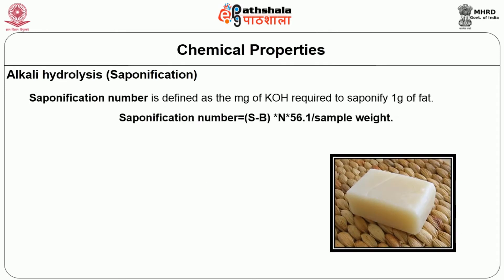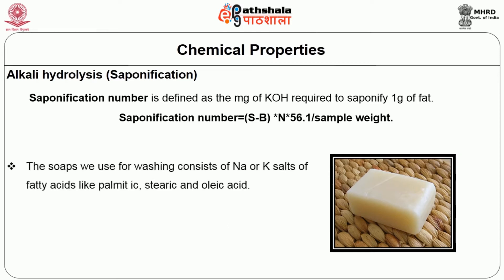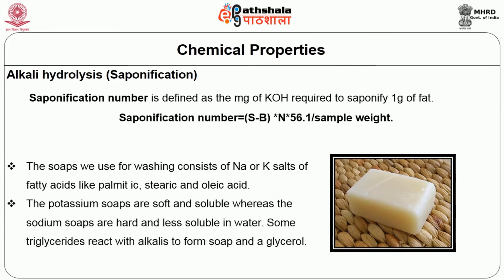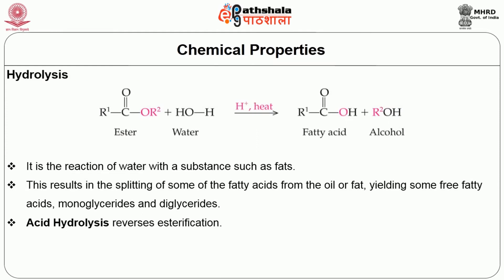The saponification number is defined as the milligrams of potassium hydroxide required to saponify one gram of fat. The soaps we use for washing consist of sodium or potassium salts of fatty acids like palmitic acid and oleic acid. Potassium salts are easily soluble in water, but sodium salts are not soluble in water — that is why sodium soaps are called hard soaps.